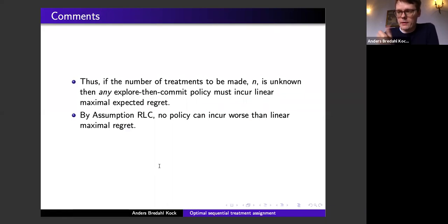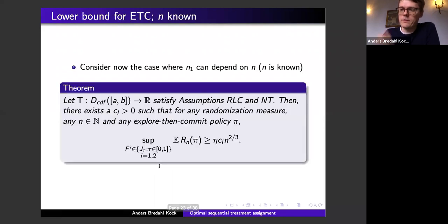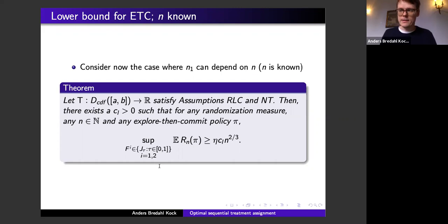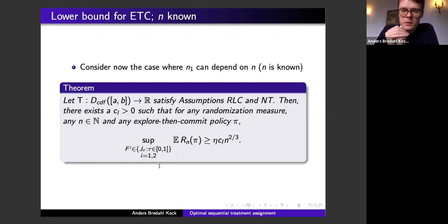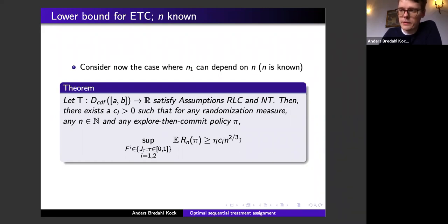It turns out you can do a little better if you actually know N in advance. If you know you have to make only very few assignments, choose n_1 small; if you're going to make 1 million, choose n_1 much larger. When N is known, the worst-case performance of any explore-then-commit policy only increases at a subpolynomial rate — specifically at rate n^{2/3}, no longer linear.